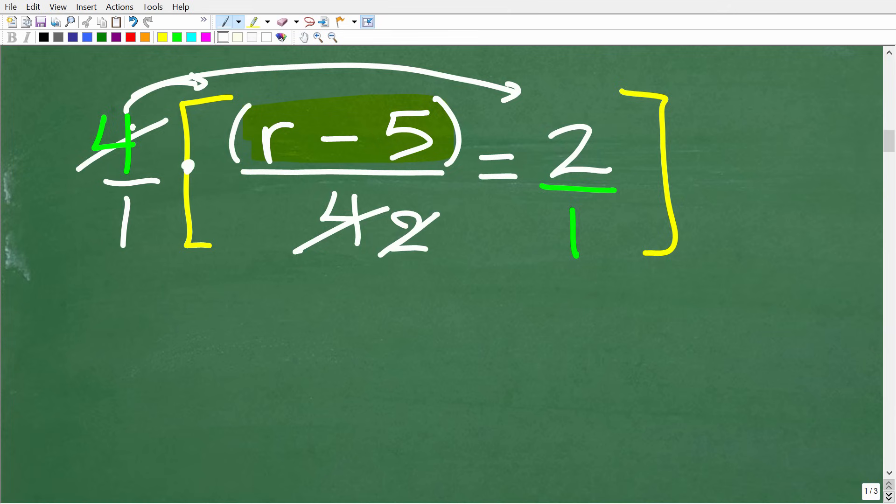okay, and this was 4. So 2 goes into 4, 2. So what would end up happening is that you would have to distribute this 2 into this expression r minus 5. So you want to be thinking about 2 times r minus 5 written this way, not 2 times r minus 5 without the parentheses. So again, use those parentheses. In this case, it really didn't make a difference.